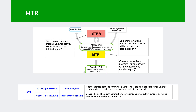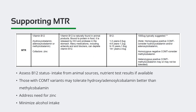MTR — 5-methyltetrahydrofolate homocysteine methyltransferase — encodes for the enzyme methionine synthase, which drives the final step in methionine synthesis. MTR converts homocysteine to methionine by transferring a methyl group from methylcobalamin, meaning methyl B12, to homocysteine to form methionine. The methyl group is obtained from 5-MTHF, the active form of folate. Variants in MTR may result in reduced enzyme activity, increased homocysteine, decreased SAMe, and increased oxidative stress. This person is heterozygous positive for MTR, meaning one parent passed on a variant and the other parent passed on the wild type.